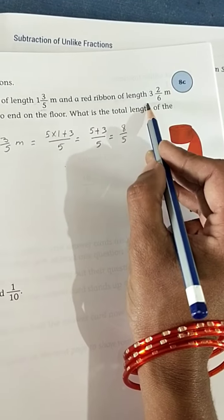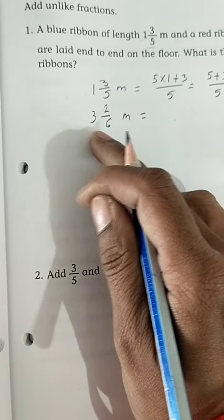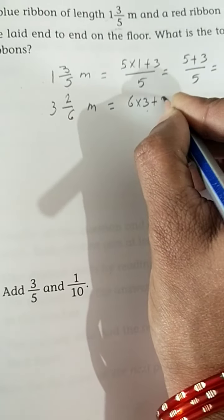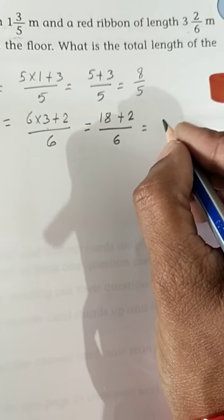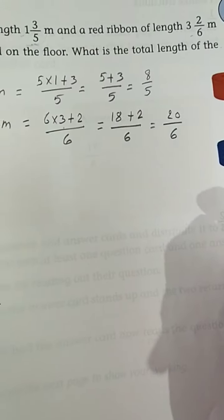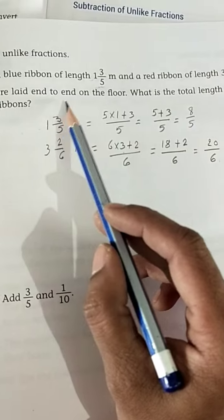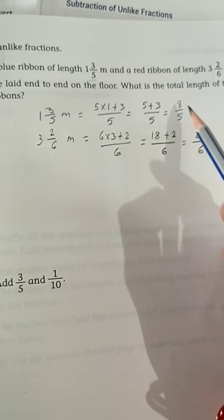Next, the red ribbon is 3 and 2/6 meters. Convert: (6 × 3 + 2)/6 = (18 + 2)/6 = 20/6. Now we have improper fractions: 8/5 and 20/6. To find the total length, you have to add these two fractions. Since the denominators are not the same, first convert to like fractions by finding the LCM of the denominators.